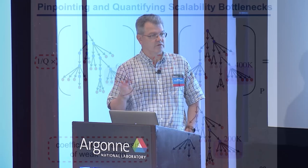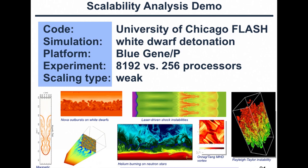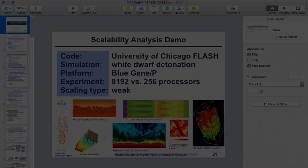For weak scaling, you multiply through some coefficients because you're doing more work. Let me demonstrate this with a canned example. I'm applying this scalability analysis idea to an adaptive mesh refinement code that does block-structured AMR designed for compressible reactive flows — it simulates things like helium burning on neutron stars. I'll use it to analyze two executions of a white dwarf detonation, measured on Argonne's Blue Gene P system.